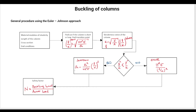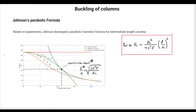Next, you calculate the slenderness of your column using the radius of gyration, taking into account the axis about which buckling is most likely to occur. You then compare the column's slenderness to the transition point slenderness. If the column's slenderness is to the left of the transition point, use Johnson's formula. If it is to the right of the transition point, use Euler's formula. After calculating the critical buckling load, you can then calculate the safety factor.